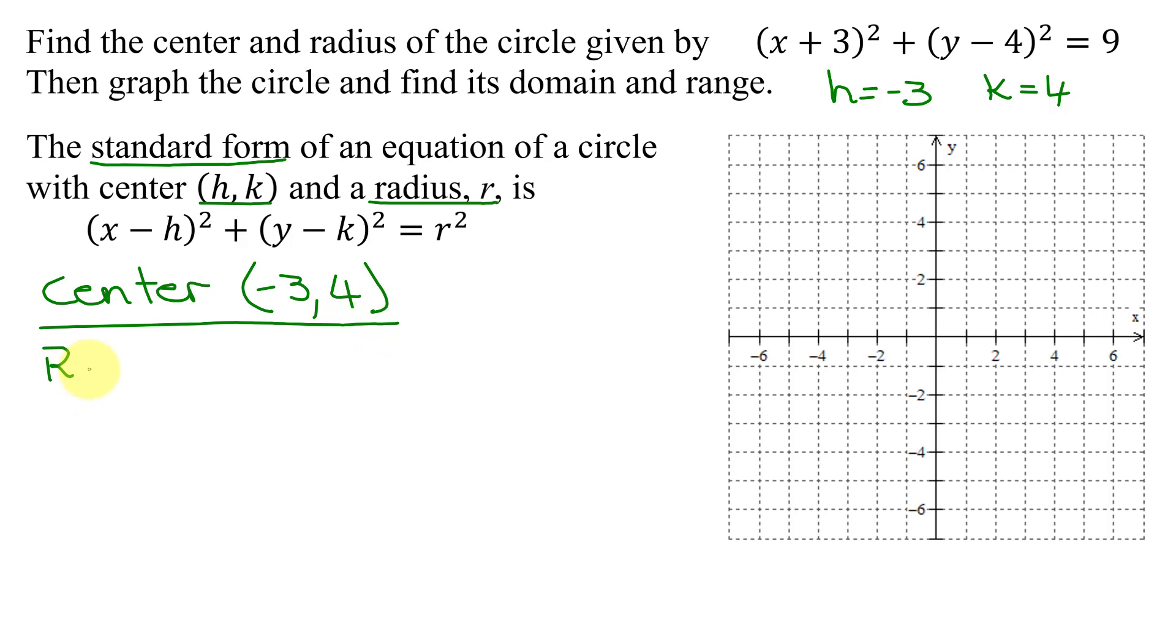Now I need to find the radius of this circle. Well, that is r, and it is the square root of this number here. So in this case, it's just the square root of 9, which is 3.